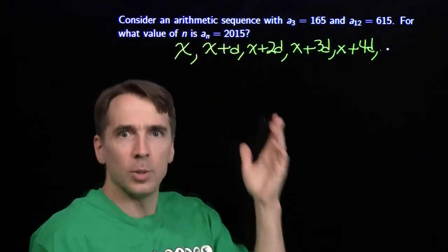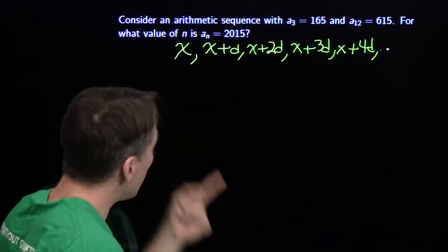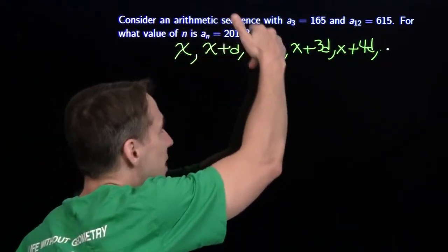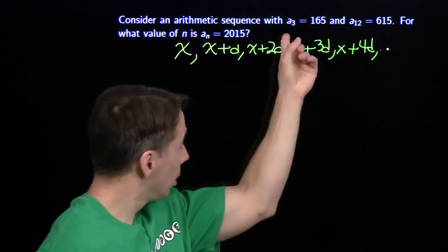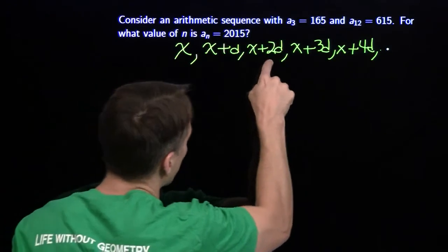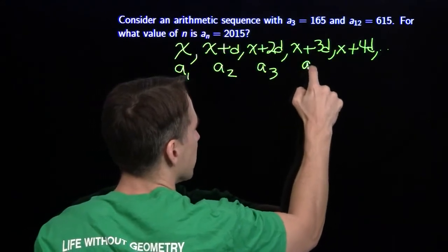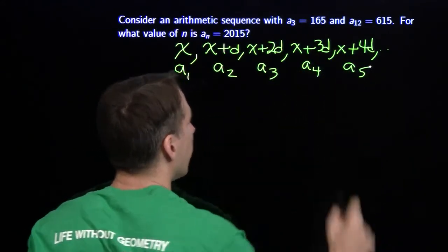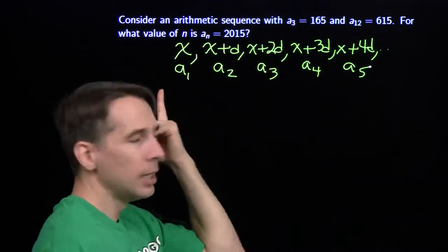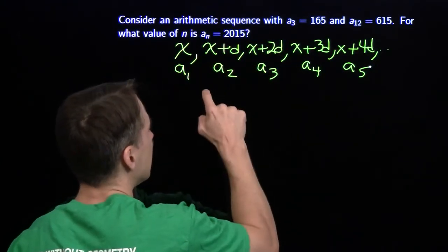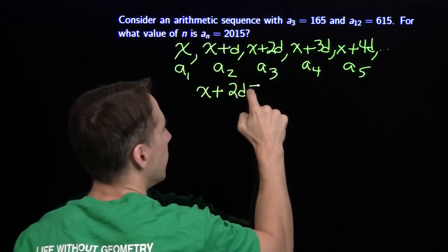In a lot of problems involving arithmetic sequences and series, I start by writing each term in terms of the first term and this common difference d — this step we take to get from each term to the next. Because then I can use these expressions to build equations. The third term is 165. To get to the third term, we start at the first term and take two steps — not three. That gives us our first equation: x plus 2d equals 165.